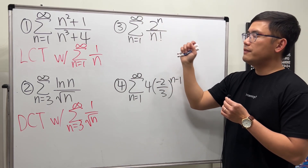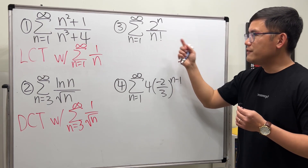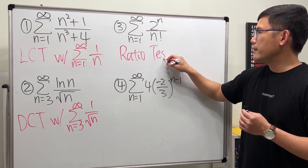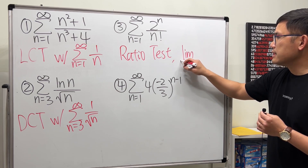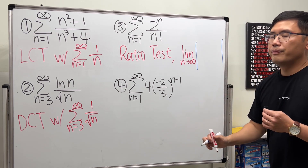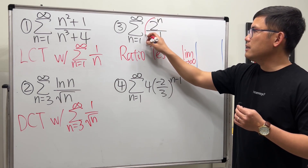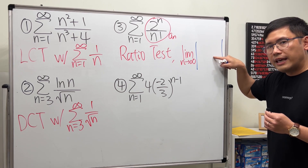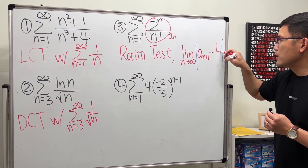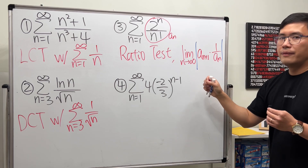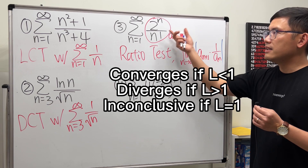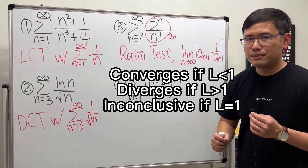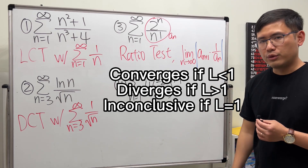Number three: the series as n goes from 1 to infinity of 2ⁿ / n!. Whenever we see a factorial, it's always a good idea to try the Ratio Test. Check the limit as n goes to infinity of |a_(n+1) / a_n|. If the limit is less than 1, the series converges; if greater than 1, it diverges; if equal to 1, we must try something else.